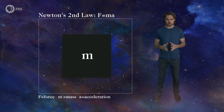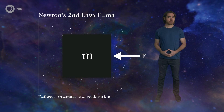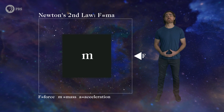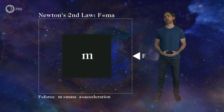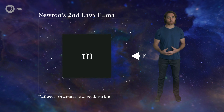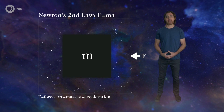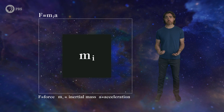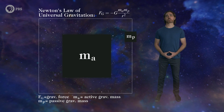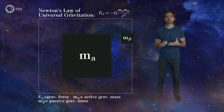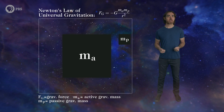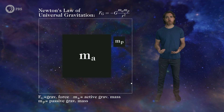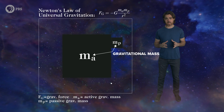Let's start with mass in Newton's physics. It plays two roles. First, it's the property of an object that resists acceleration. This is encapsulated in Newton's second law, which defines the connection between the amount of force applied and the acceleration that results. This type of acceleration-resisting mass is called inertial mass. Mass is also the property that both causes and responds to gravity — it appears in Newton's law of universal gravitation. The more mass an object has, the more strongly its gravity pulls on surrounding objects, and the more strongly it gets pulled by gravity.